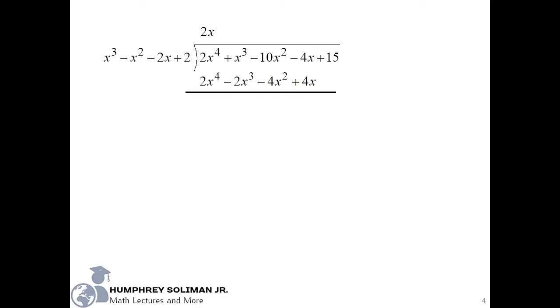Now we will subtract. To do that, we need to change the signs and then perform addition. We will get 3x cubed, minus 6x squared, minus 8x, plus 15.